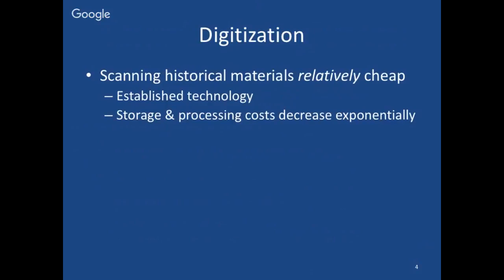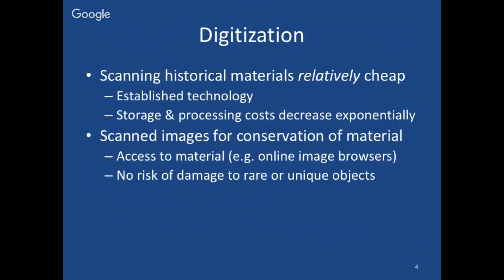This change from static to dynamic is related in part to a rapid pace of digitization, particularly in the sense of scanning. Scanning historical materials is relatively cheap, especially relative to creating high-quality proofread transcriptions of the same content. Producing digital images is a relatively mechanical, well-understood process, and the storage and processing costs are continuing to decrease exponentially. There are also conservation reasons — these may be rare or unique objects, and if scholars work with images rather than physical objects, this reduces damage and risk.